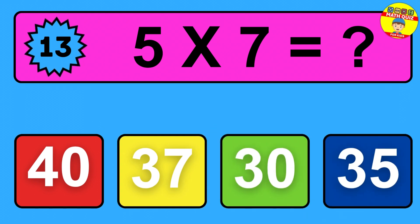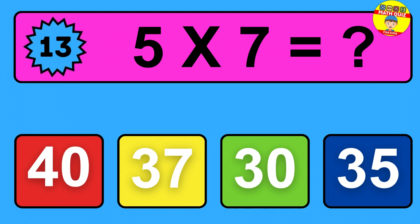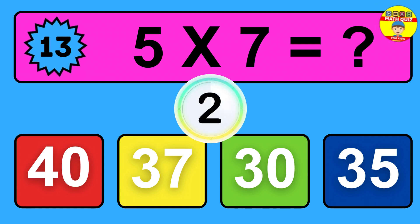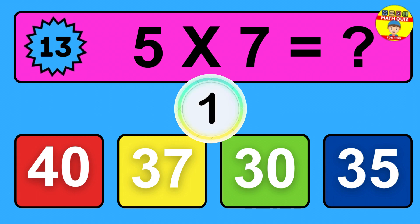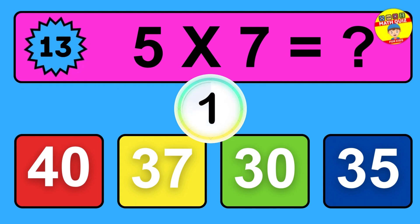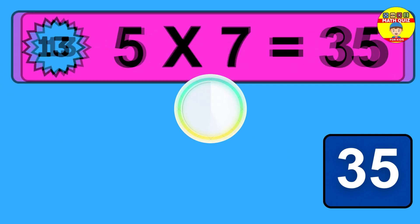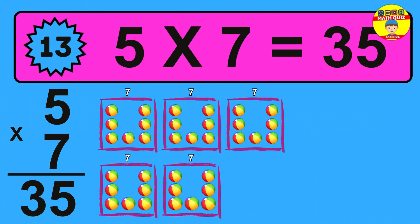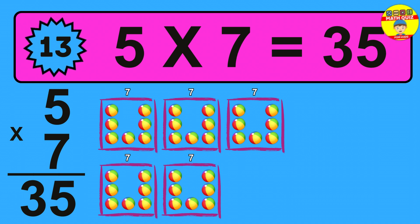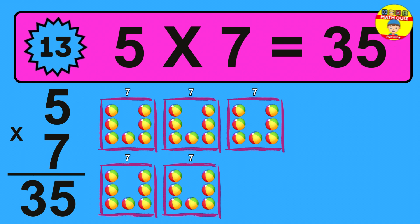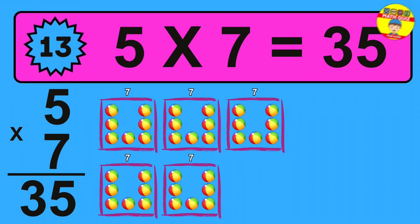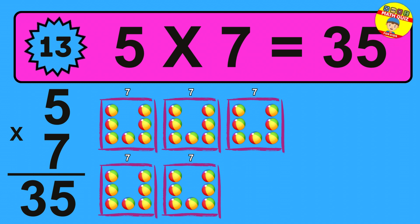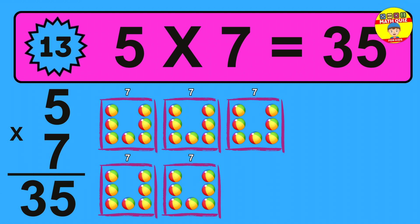Question 13: 5 times 7 equals what? The answer is 5 times 7 is 35. To calculate, we have 5 groups with 7 balls each one. So how many balls do we have? 35 balls.